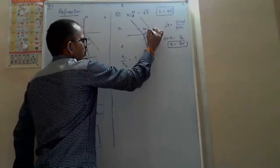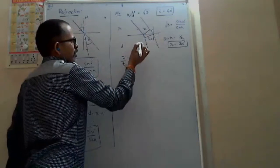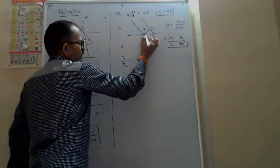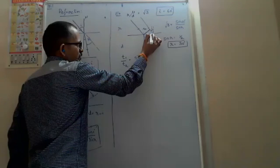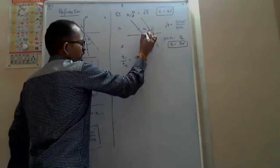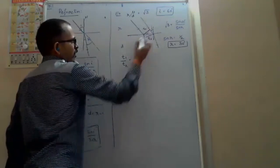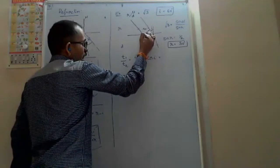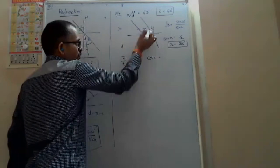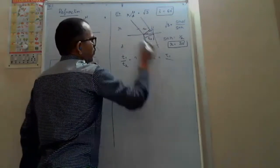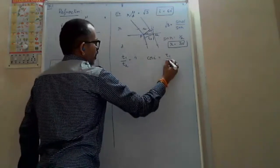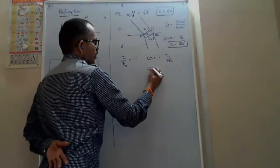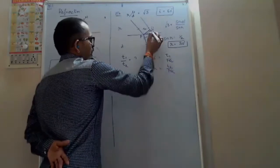The angle of incidence means the right-angle triangle has angle 90 minus i, so this angle is i. Then cos i equals adjacent side by hypotenuse, which gives t1 by pq. Similarly, cos r equals t2 by pq. Therefore t1 by t2 equals cos i by cos r.